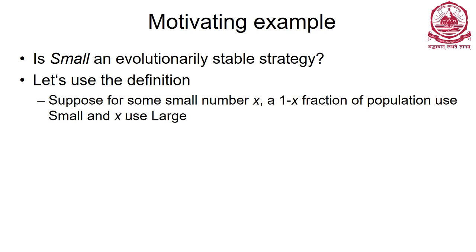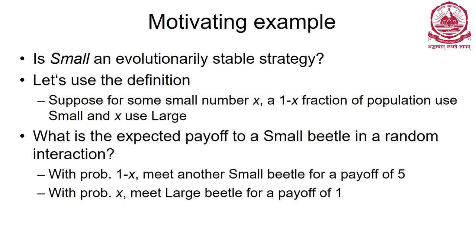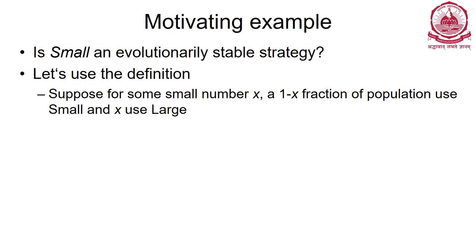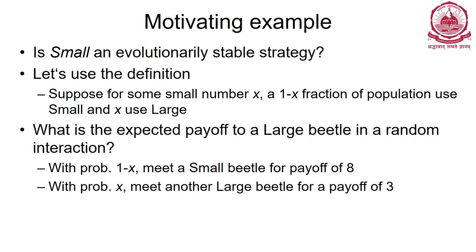For a small fraction x, suppose 1-minus-x of the population is small and x is large. The expected payoff for small: with probability 1-minus-x a small meets another small for payoff 5, and with probability x it meets a large for payoff 1, giving expected payoff 5(1-x) + 1x = 5 - 4x. For the large beetle: with probability 1-minus-x it meets a small for payoff 8, and with probability x it meets a large for payoff 3, giving expected payoff 8(1-x) + 3x = 8 - 5x.